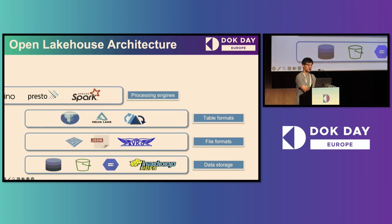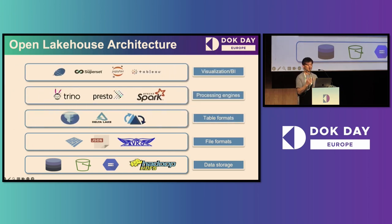Here is a high-level open lakehouse architecture comprising multiple layers. Starting from the bottom layer, you can have SQL database, cloud object storage, HDFS, and more. Above the data storage is the open file format, including Parquet, JSON, and Avro. As for the table format, there are several choices, including Apache Iceberg, Delta Lake, and Apache Hudi.